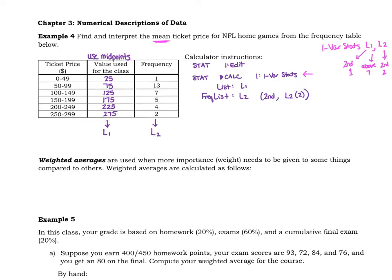When you get done, we are finding and interpreting the mean ticket price for NFL home games. This is for all of the NFL teams, so we're going to use the symbol μ and you should end up with a value of $131.25. Now remember it's going to appear as x-bar on your calculator. x-bar and μ are the same thing, it's just a matter of whether we're talking about a sample or a population. This is a population. So the interpretation would be the average cost for an NFL home game ticket is $131.25.